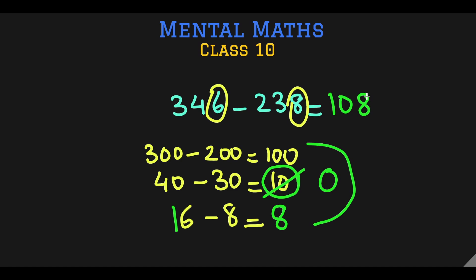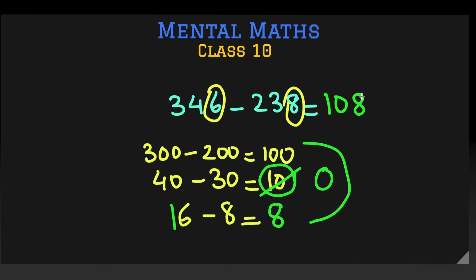So this is the thing that you have to take care of while subtracting in your brain: if a number cannot be subtracted from another number because that number is smaller, you have to borrow. Now I will be teaching method number 2 and I will be doing this same question, 346 minus 238, using the second method.